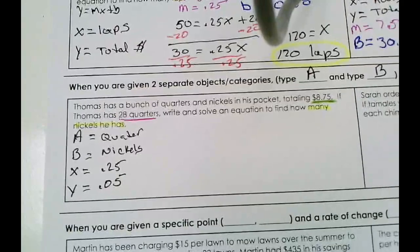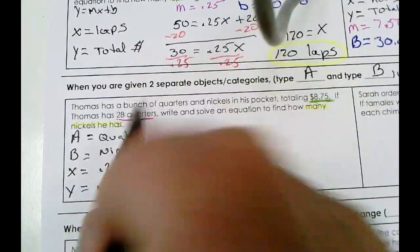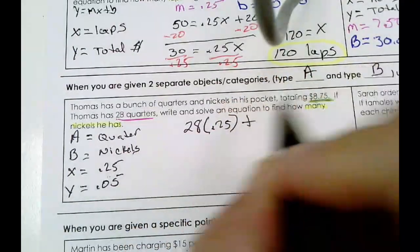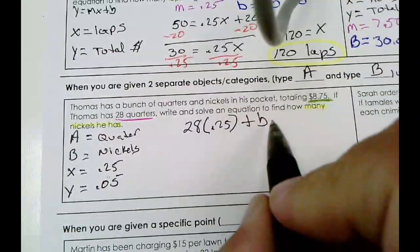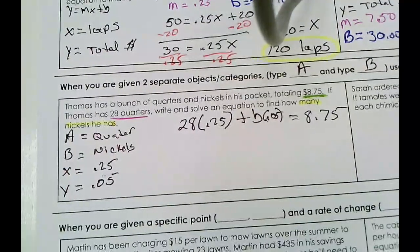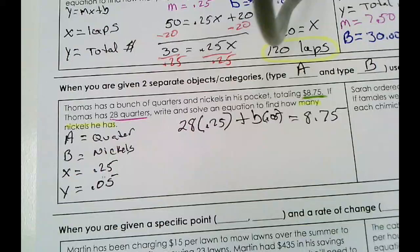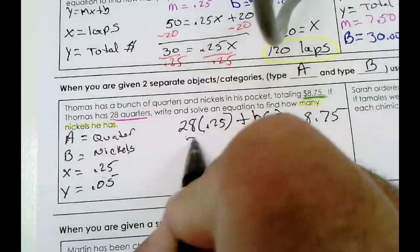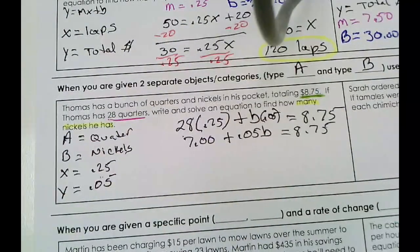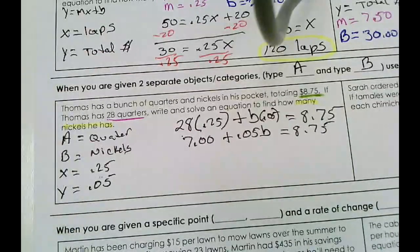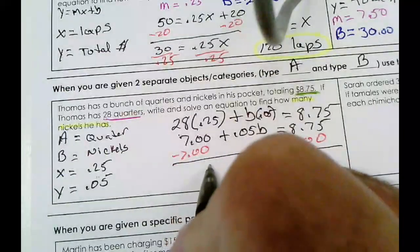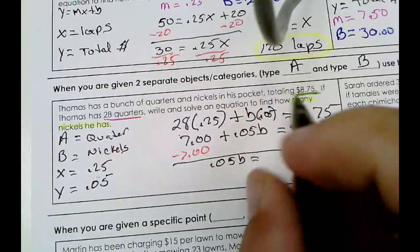Let's write our equation in standard form: Ax plus By equals C. A is quarters — 28 times the value of a quarter, 25 cents — plus B, how many nickels (unknown), times the value of a nickel. Wait — 5 cents is equal to $8.75.